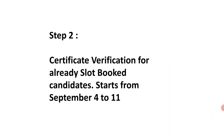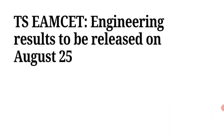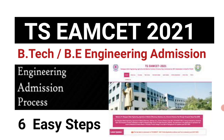Once your certificate is verified, you go for web counseling and select your desired college. After web counseling, you receive your seat allotment order and then report to the college online — and your admission is confirmed. I hope this helps you get admission in BE and BTEC engineering colleges for 2021. Thanks for watching, and please share this video with your friends.